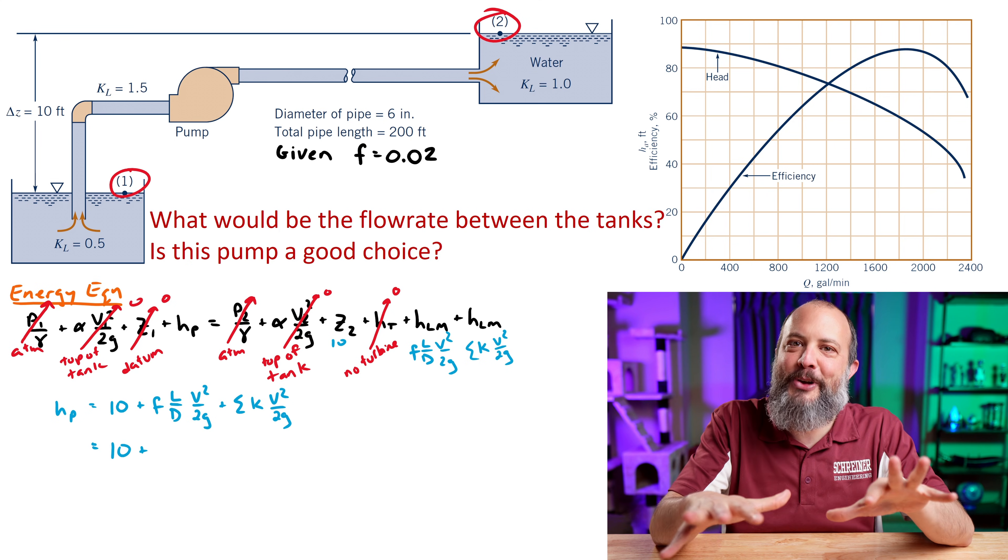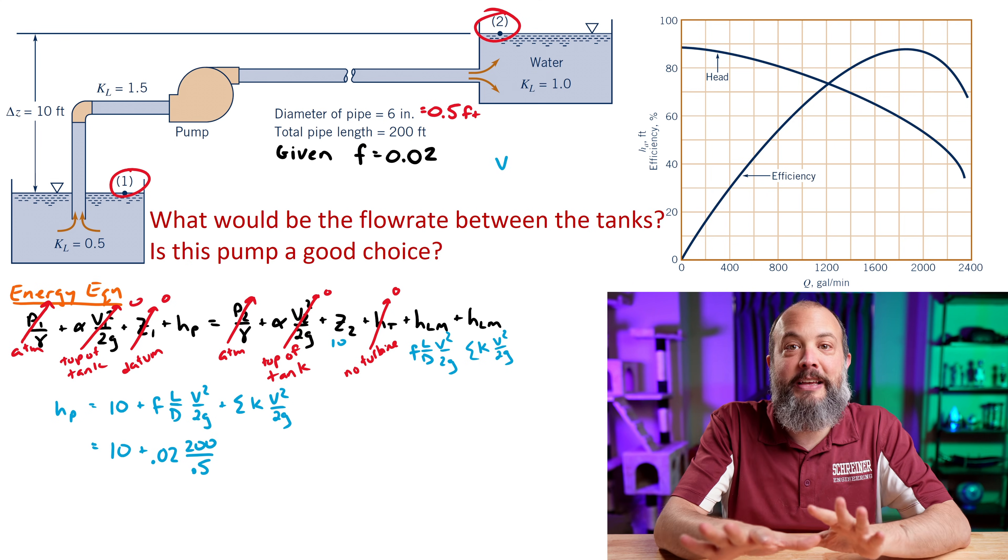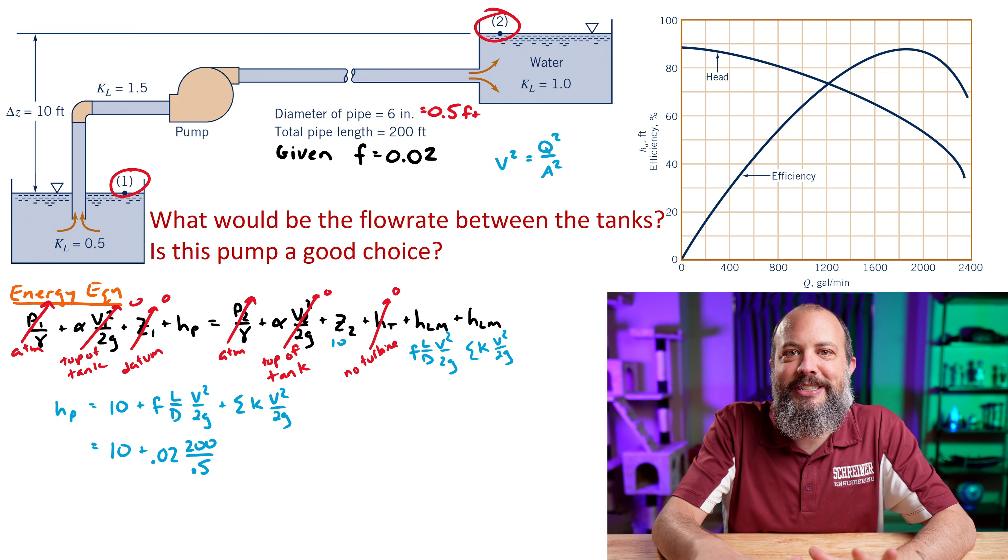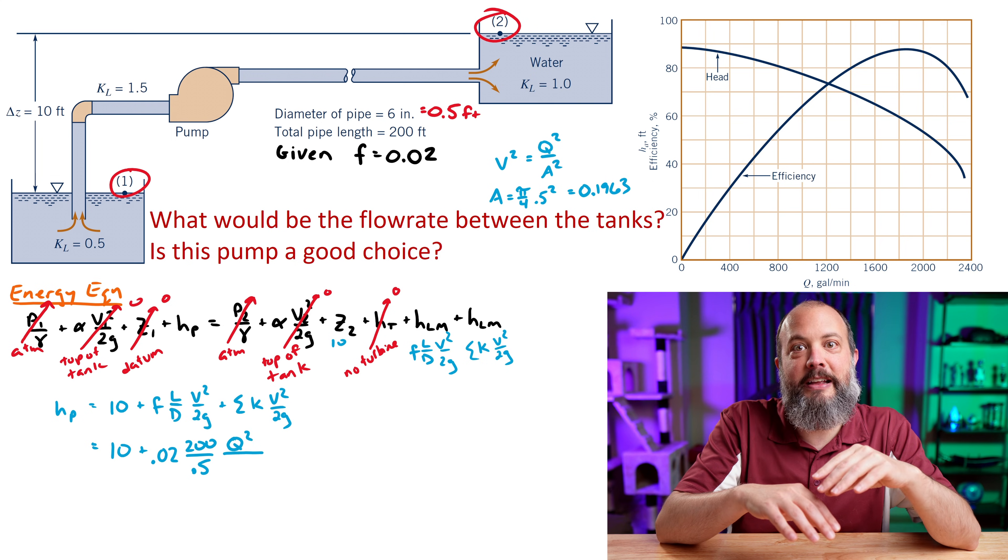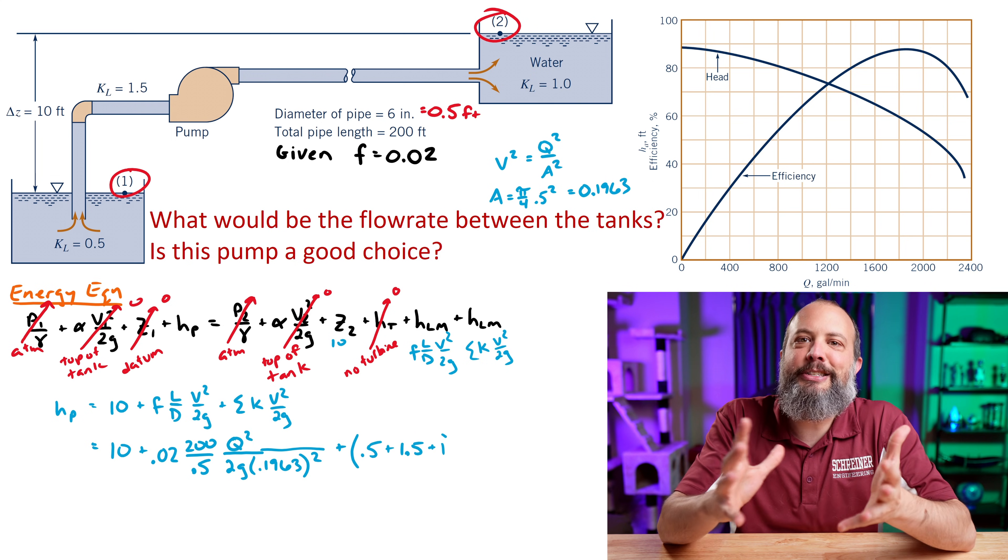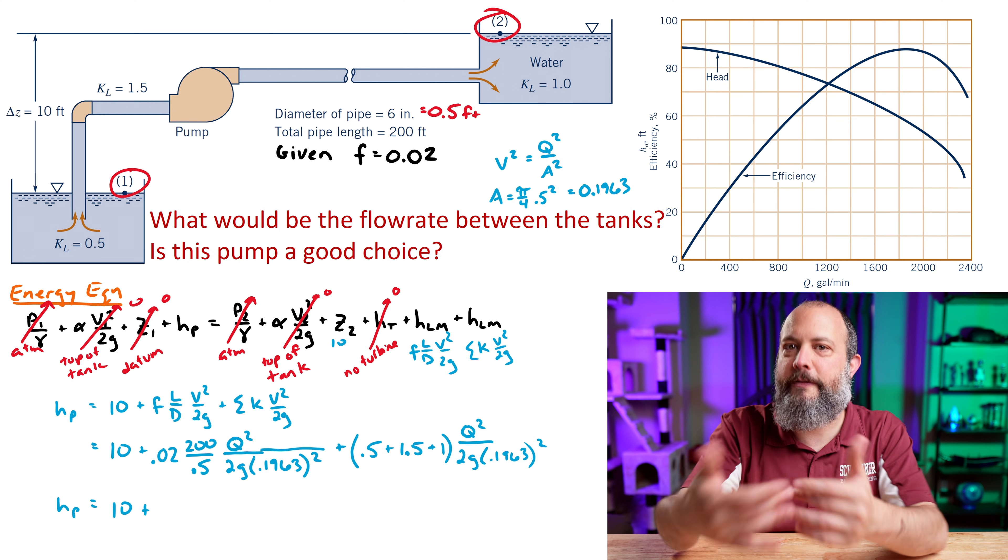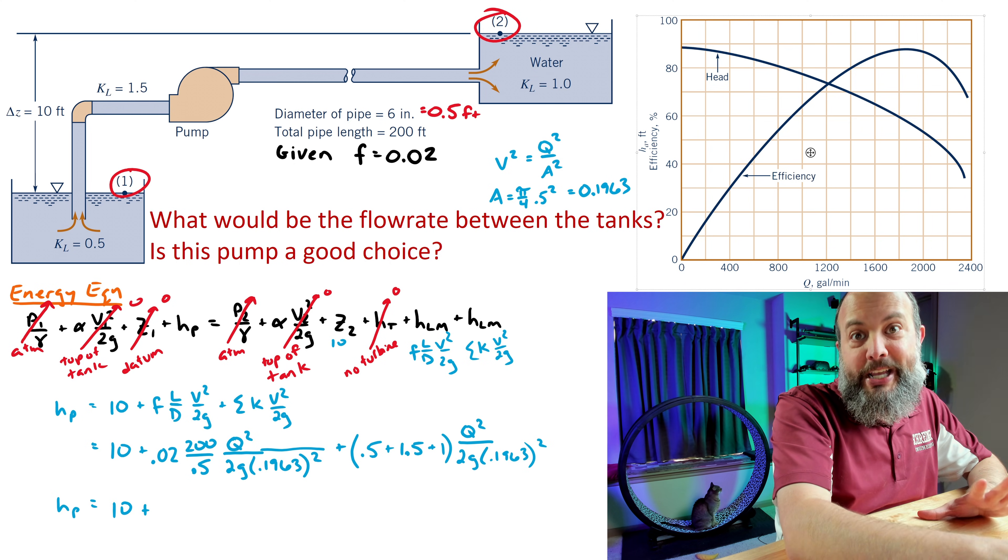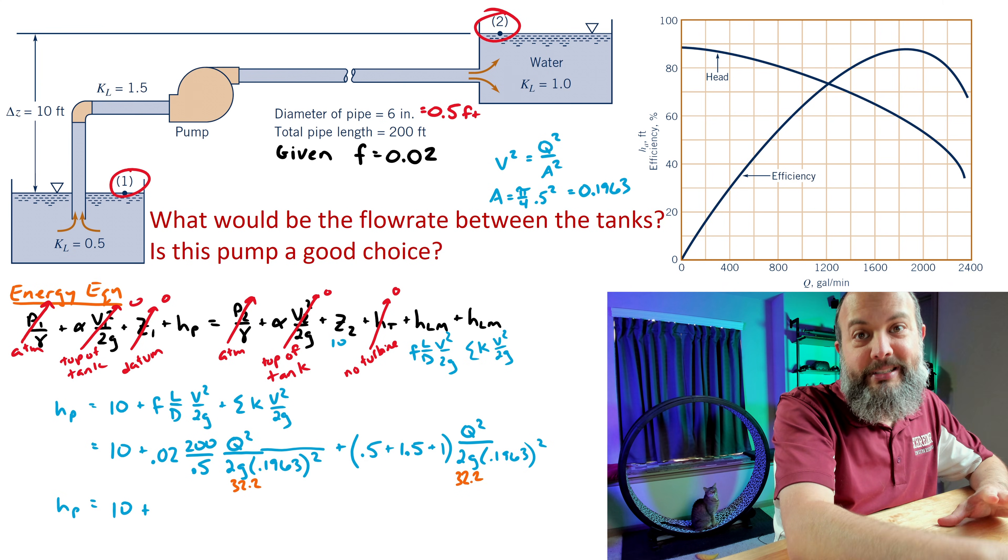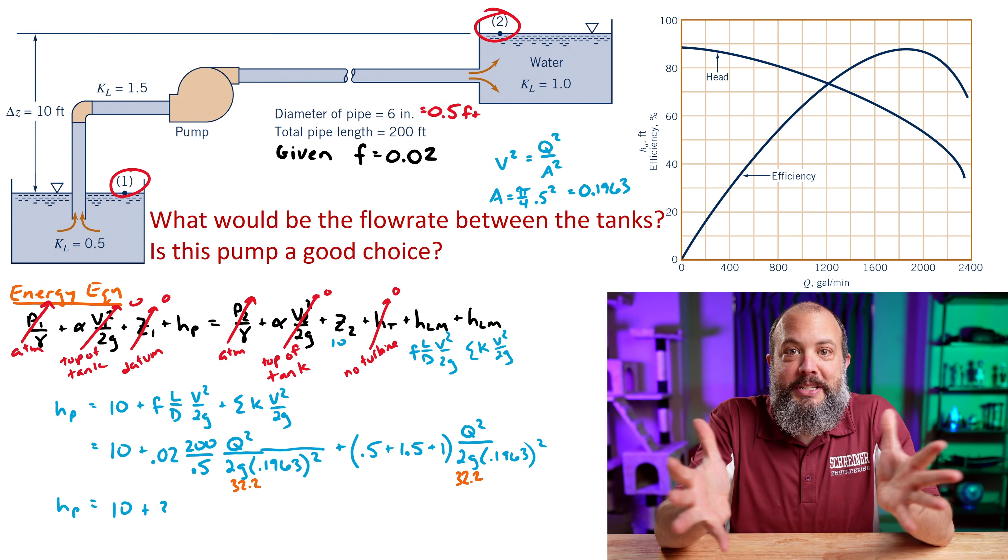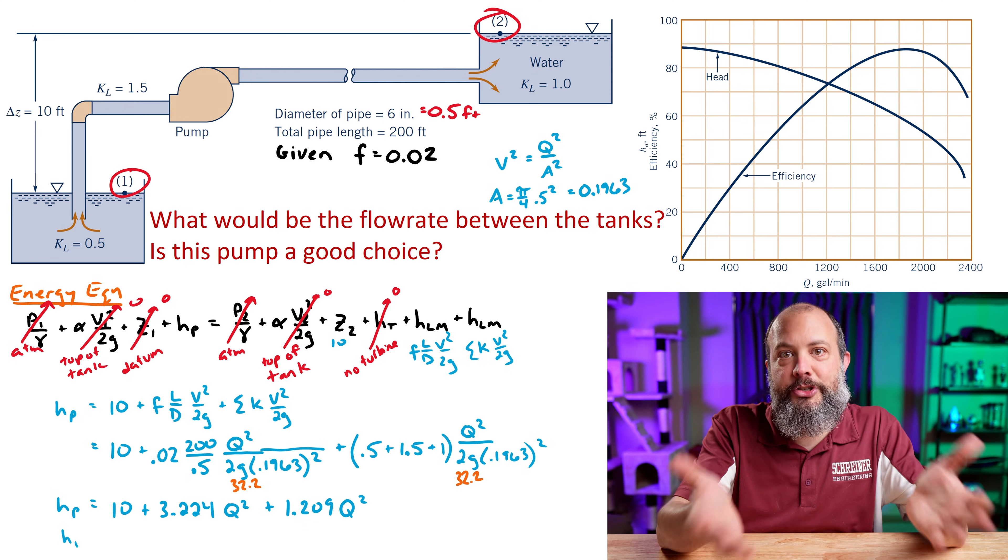And then minor loss is KV squared over 2G. So in this very unrealistic, easier version, you've been given the friction coefficient, 0.02, also given all of the minor loss coefficients. So we just plug those numbers in, and since velocity is Q divided by A, and then velocity squared is Q squared divided by A squared, that's how we're getting flow rate into this equation. We're replacing the velocity terms with flow rate terms. Being super careful to use G of 32.2, since this problem is in English units and not SI units, and this is the system curve. Pump head will be 10 plus 4.4 Q squared.